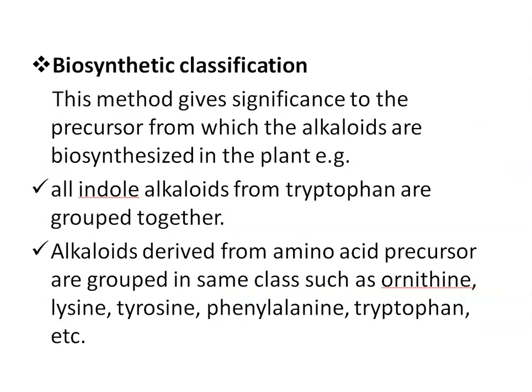Then biosynthetic classification. This method gives significance to the precursor or starting compound from which the alkaloids are biosynthesized in the plants. For example, all indole alkaloids from tryptophan are grouped together. All alkaloids derived from amino acid precursors are grouped in the same class, such as ornithine-derived alkaloids, then lysine, tyrosine, phenylalanine, or tryptophan-derived alkaloids, etc.